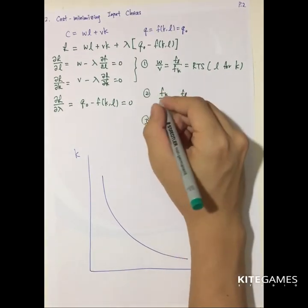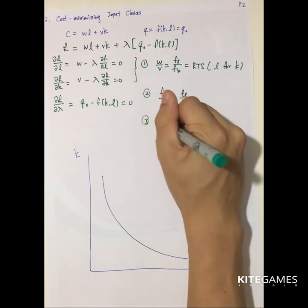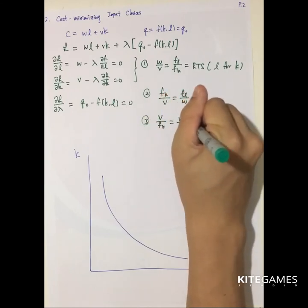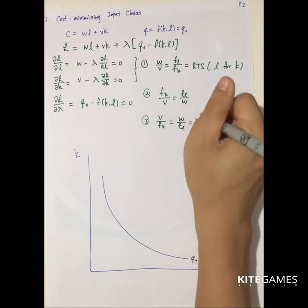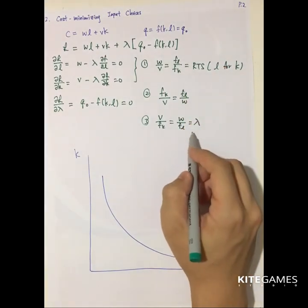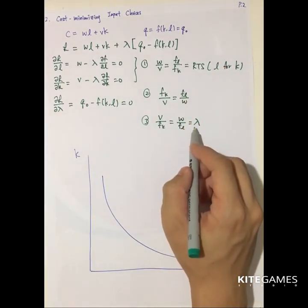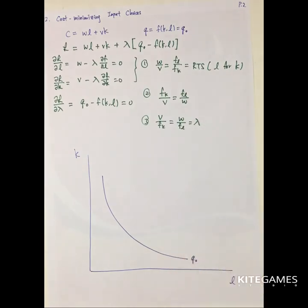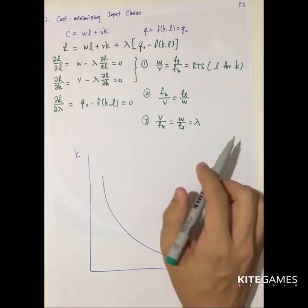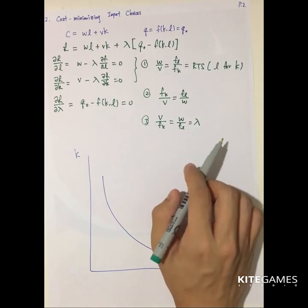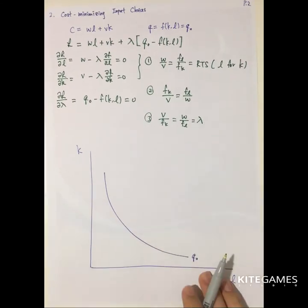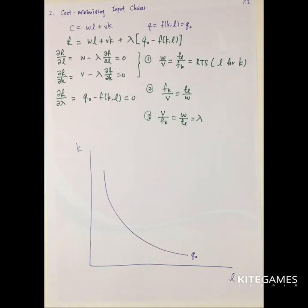The third interpretation is that V over FK equals W over FL, which equals lambda, the Lagrangian multiplier. This represents the cost-to-benefit ratio for the firm, similar to utility maximization but here we focus on cost. So lambda is the cost divided by benefit ratio.